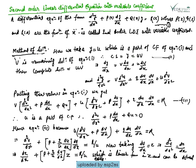A second order linear differential equation with variable coefficients is defined as: d²y/dx² + P(x) dy/dx + Q(x)y = R(x), where P is the coefficient of dy/dx, and Q and R are functions of x. This equation is called a second order linear differential equation with variable coefficients.